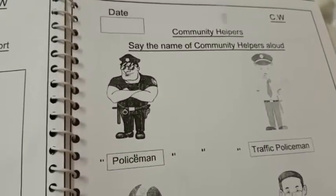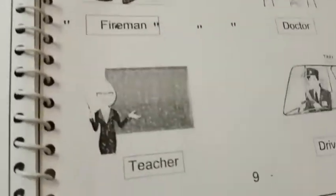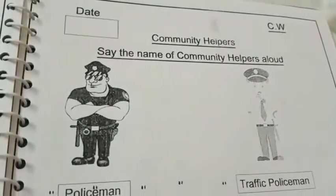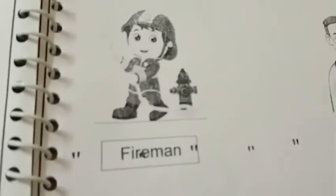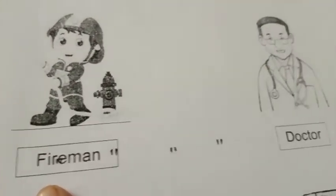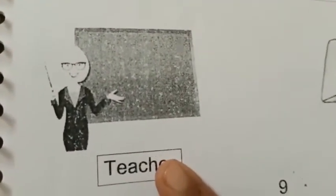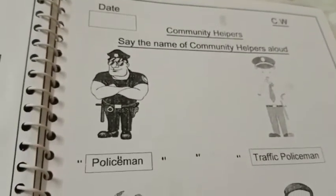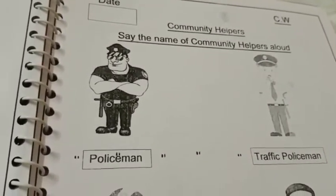Children, let's quickly revise the community helpers given in our spiral book, page number nine. Let's read the heading: community helpers — policeman, traffic policeman, fireman, doctor, teacher, and driver. Thank you, everyone. Hope you have understood community helpers. See you all in the next session. Till then, be happy, stay safe.